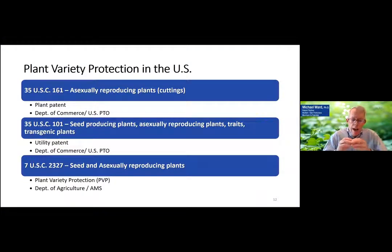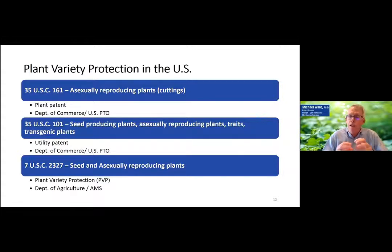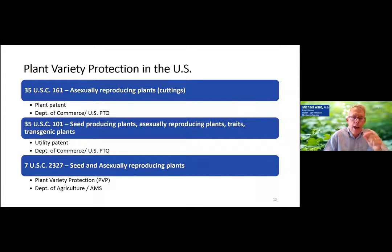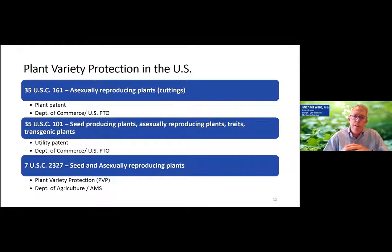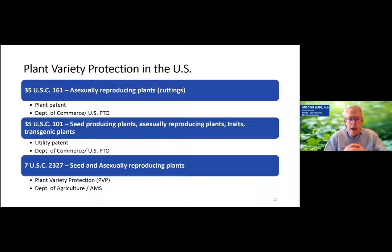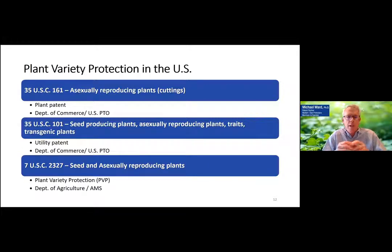The types of plant variety protection in the United States: 35 USC covers plant patents for asexually reproducing plants. 35 USC Section 101 covers seed-producing plants, asexually reproducing plants, traits, and transgenic plants. The third form is plant variety protection, governed by 7 USC 2327. It used to be that PVP protection in the United States was only for seed-reproducing plants, but that's changed — you can now protect asexually reproducing plants under the USDA for PVP protection as well.